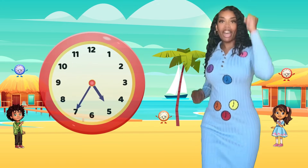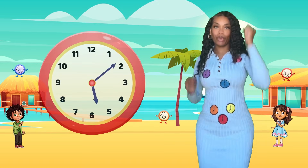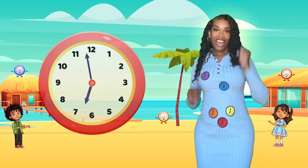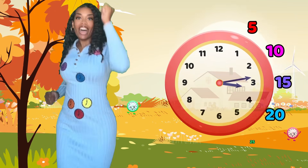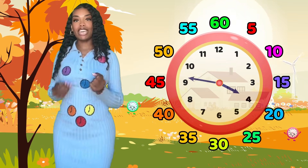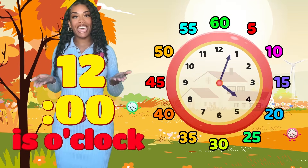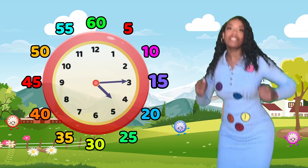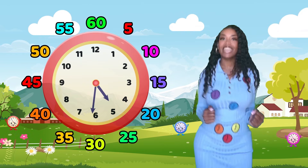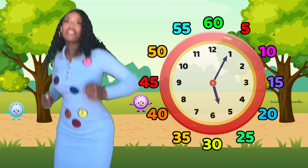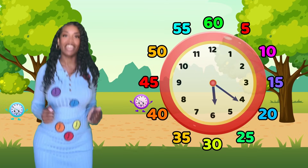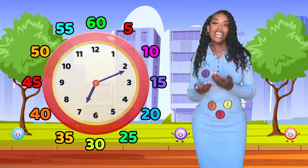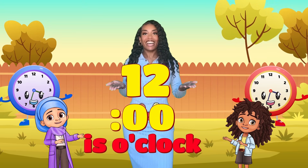Start at 12, move to the right, work your way around the clock. Count by fives up to 55, then 12 is o'clock. Just count: 5, 10, 15, 20, 25, 30, 35, 40, 45, 50, 55 — 12 is o'clock.